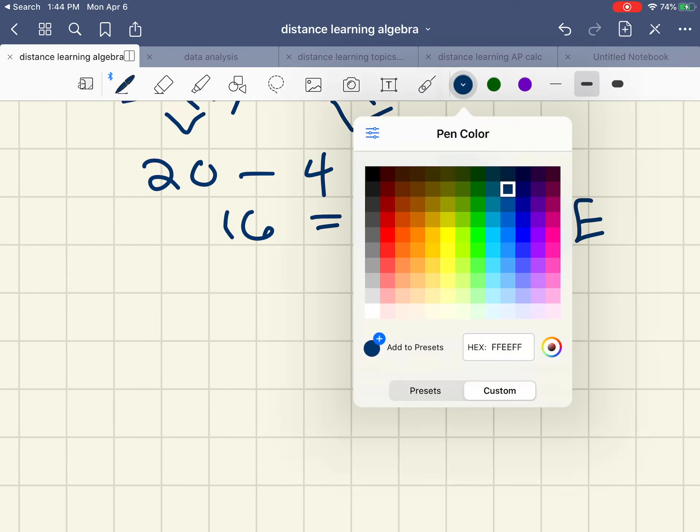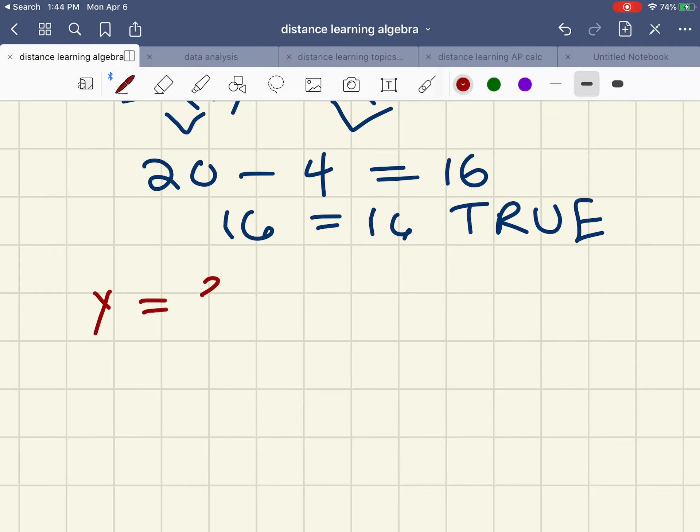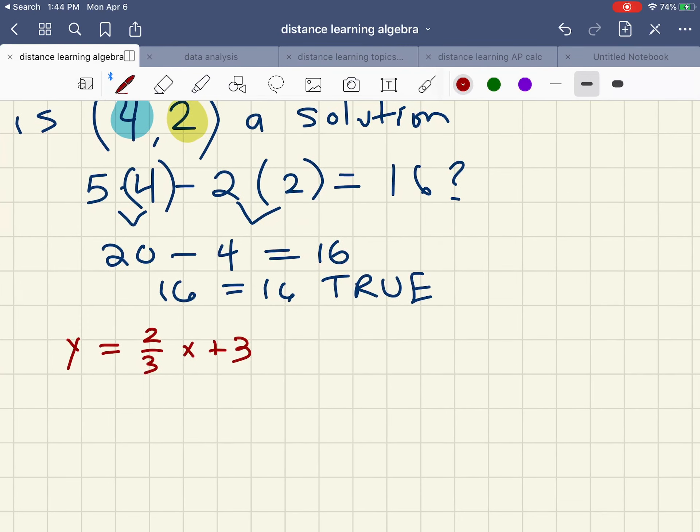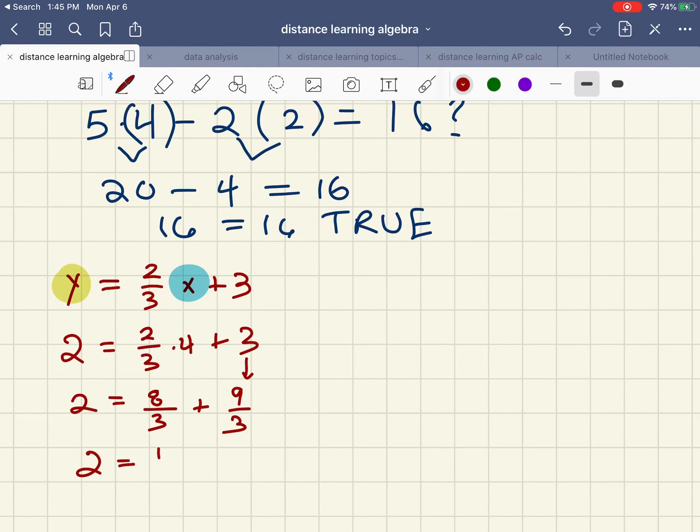But if we look at the other equation, y = 2/3x + 3, I'll do that in a different color. And again we're going to plug in the 4 and the 2. Let's see if this is a true statement or not. 2 = 2/3 times 4 plus 3. Well, I can already tell that 2 is not equal to this because we have a positive number here and we're adding 3 to it. But let's just finish it off. This is going to be 8/3 plus 3, which is actually the same as 9/3. 2 does not equal 17/3. So this would have been false for the second equation.